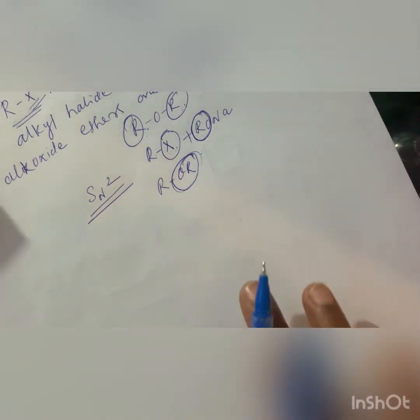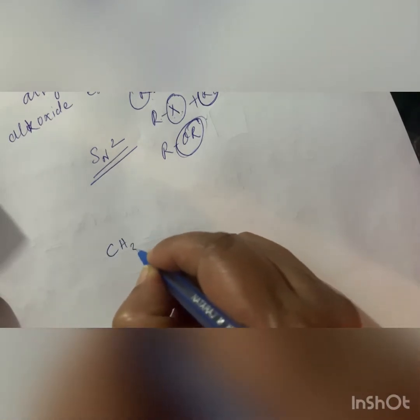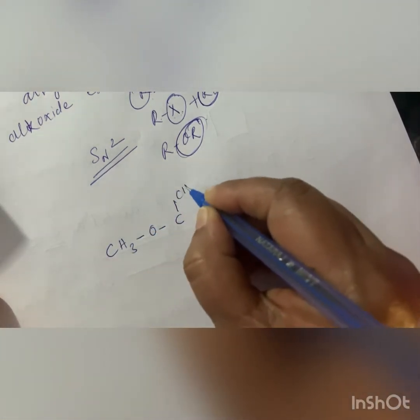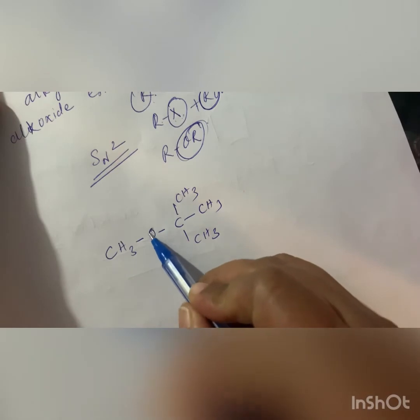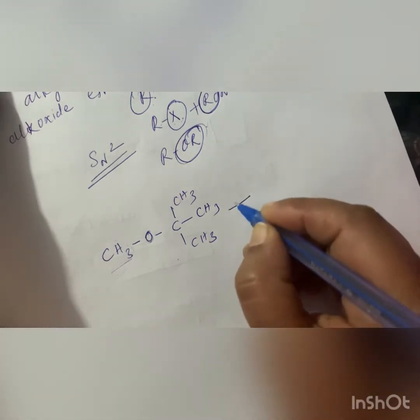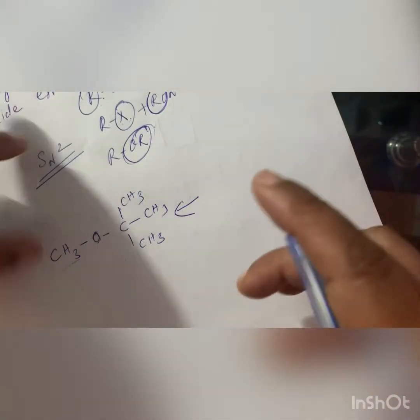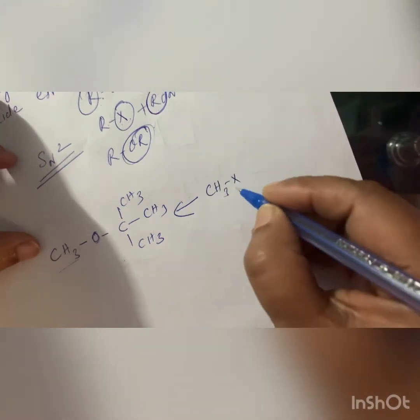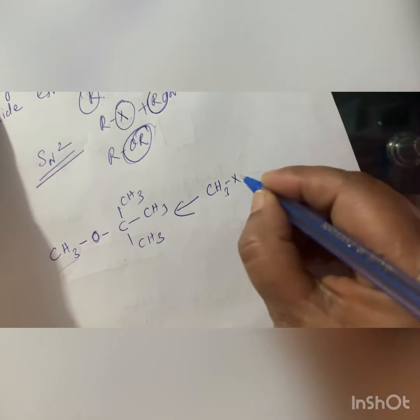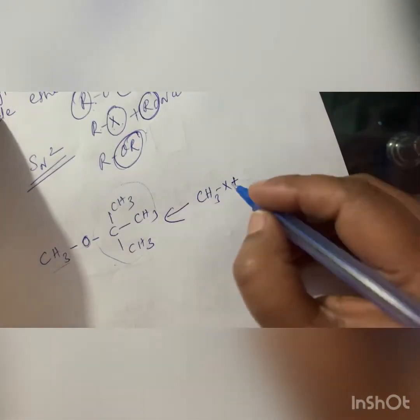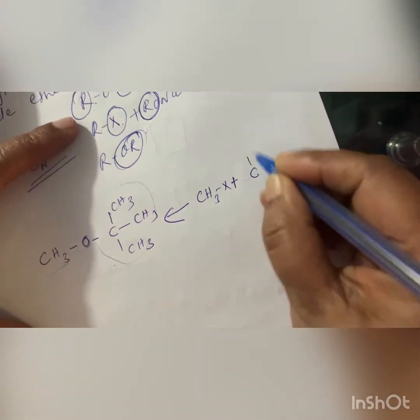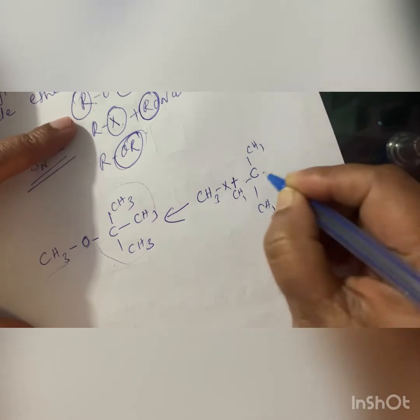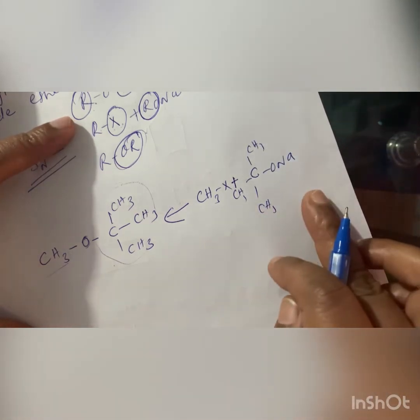For example, consider the ether CH₃–O–C(CH₃)₃. One side of the oxygen is primary (CH₃) and the other is tertiary (C(CH₃)₃). Since the primary group must come from RX, you use CH₃X plus (CH₃)₃C–ONa. The tertiary group comes from the sodium alkoxide side.